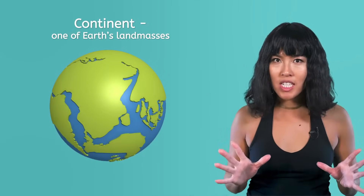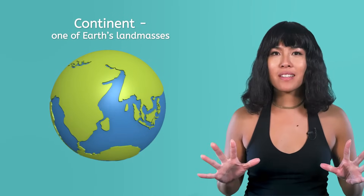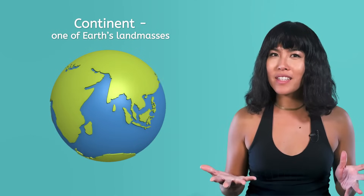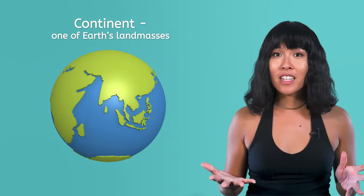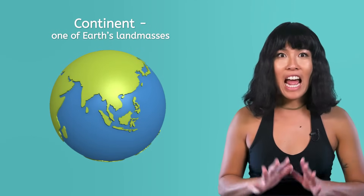The idea of entire continents or land masses moving around might seem pretty hard to imagine. In fact, when it was first proposed, people didn't believe it at all. The first person to come up with this idea was Alfred Wegener, a scientist who noticed, just like us, that the Earth's continents kind of looked like a big puzzle.